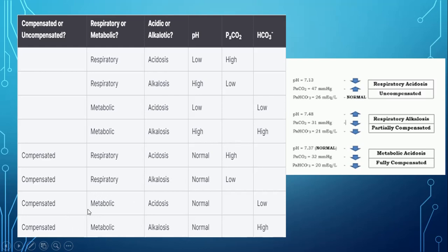In metabolic disorders, look for changes in CO2 levels for compensation. For example: pH 7.13, CO2 47 (high), bicarbonate 26 (normal) — this is respiratory acidosis, uncompensated, because bicarbonate is still normal and pH is defective.